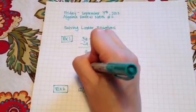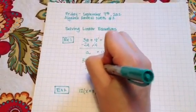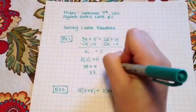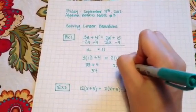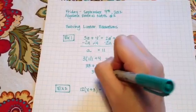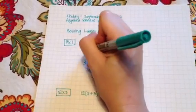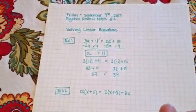3 times 11 is 33 plus 4 is 37. 2 times 11 is 22 and 22 plus 15 sure enough is 37 so this checks which means a equals 11 really is our solution to this equation.